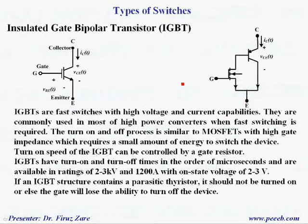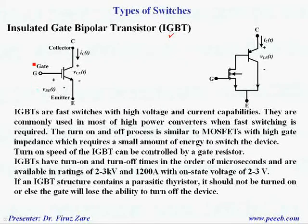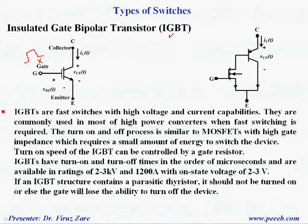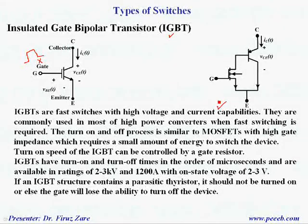The next control switch is IGBT, or Insulated Gate Bipolar Transistor. Basically, it is also voltage controlled — by applying a gate signal, we can turn on the IGBT, and when we remove the gate signal, the IGBT turns off. IGBTs are fast switches with high voltage and current capabilities. In most modern power electronic systems we can use IGBTs. The turn-on and turn-off process is similar to MOSFET.